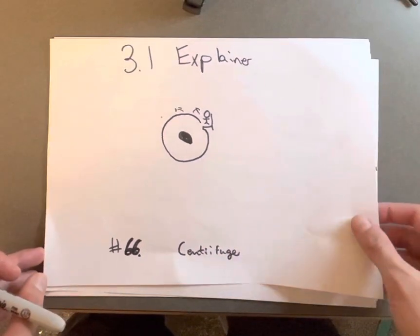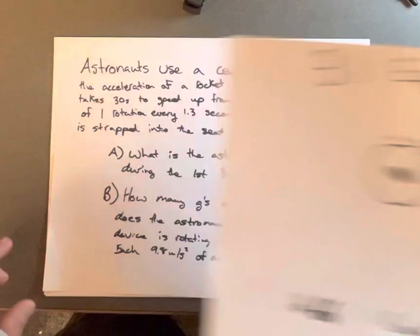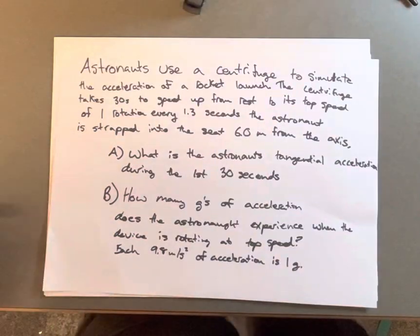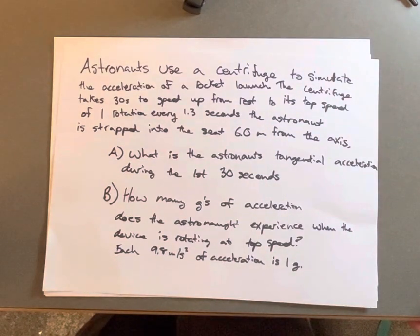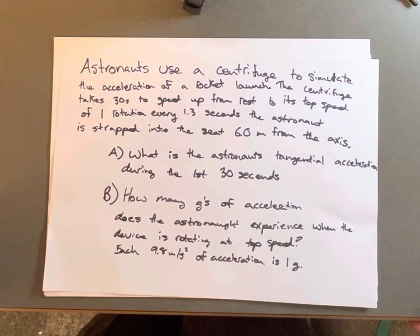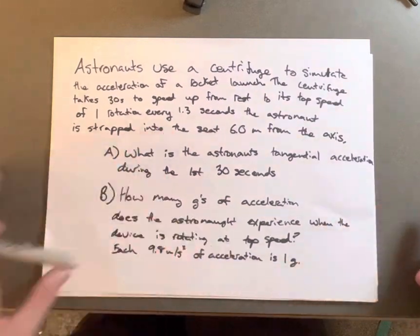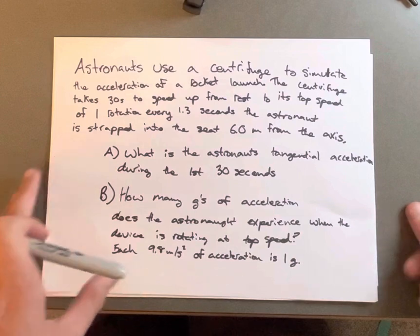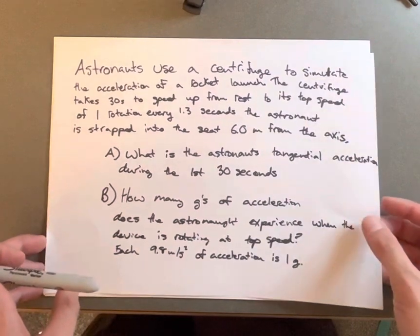3.1 explainer. The astronaut is going around a centrifuge. Astronauts use a centrifuge to simulate the acceleration of a rocket launch. The centrifuge takes 30 seconds to speed up from rest to its top speed of one rotation every 1.3 seconds. The astronaut is strapped into the seat 6 meters away from the axis.